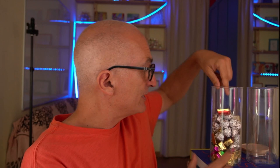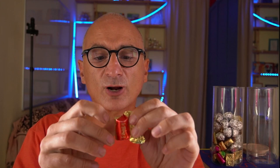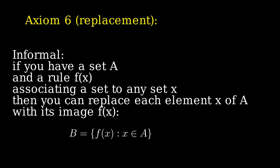Axiom 6. By the way, here we have the catalog of books that do not contain a picture of themselves — but we don't need it anymore. Axiom 6 says that if you have two jars of candies, you can open them, unwrap all the candies, and put all the unwrapped candies in the second jar. More formally, axiom 6 — the axiom of replacement — says: if you have a set A and a rule F(X) that associates a set to any given set X, then you can replace each element X of A with its image F(X), creating the set B of all images F(X) for all elements X in A.